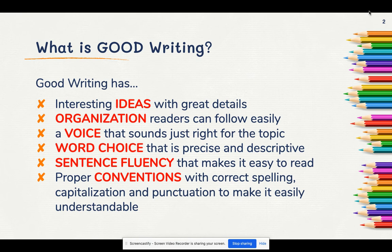The first question we have to think about when we think about writing is: what is good writing? Good writing has interesting ideas with great details, organization that the reader can easily follow, voice that sounds just right for the topic, word choice that is precise and descriptive, and sentence fluency that makes it easy for the reader to read. And of course, it has to have proper conventions — correct spelling, capitalization, and punctuation — to make it easy for the reader to understand.